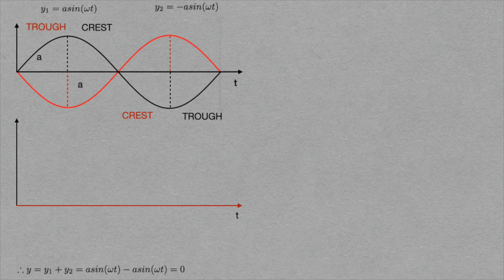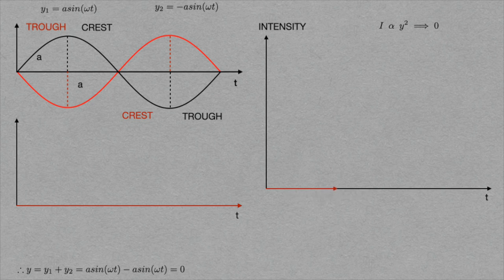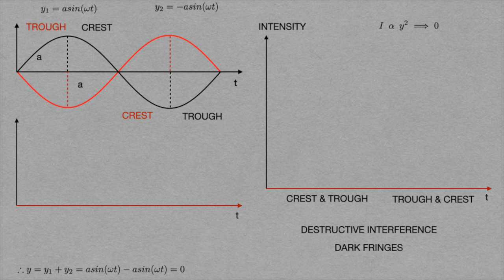When the superposition happens, the amplitude becomes zero during wave propagation throughout the entire time. Now, we look at the intensity of this superposition over time t. The intensity is always directly proportional to the square of the displacement. Hence the intensity becomes zero over the entire time t. When crest of one wave falls on another wave's trough, or vice versa, the intensity becomes zero. As the intensity becomes zero throughout the entire time t due to superposition of waves, destructive interference is formed, and as a result, a dark fringe is formed at that place.